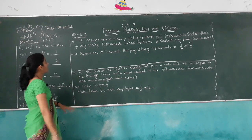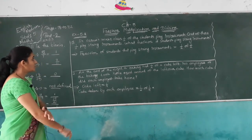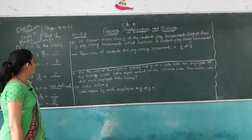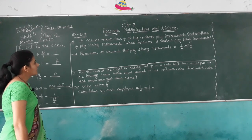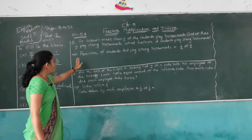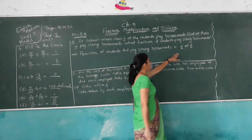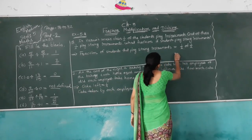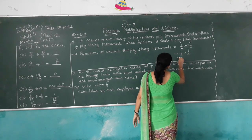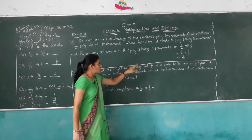Exercise number 5.4: word problems. In Varun's music class, 1/2 of the students play an instrument. Out of these, 1/2 play string instruments. What fraction of students play string instruments? Fraction of students playing string instruments = 1/2 of 1/2 = 1/2 × 1/2 = 1/4.